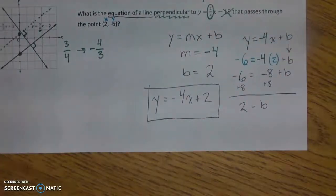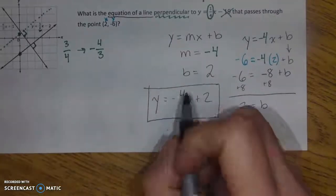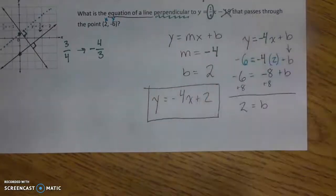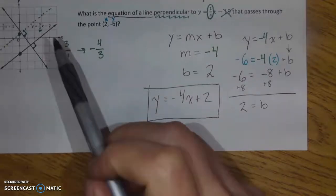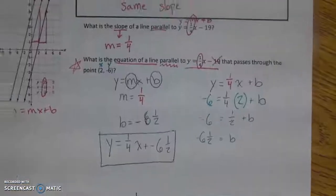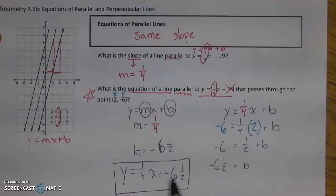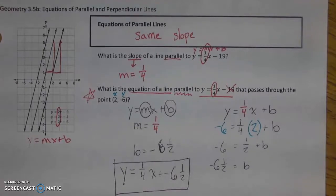At that point, we're done. If you have a graphing calculator, feel free to graph this and the original problem — they should hit 90 degrees. Same thing with the parallel lines: put in the equations you started with versus ended with and double-check that they are actually parallel. Your homework is posted on Classroom. Please let me know if you have any questions. Have a great day.